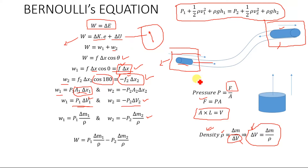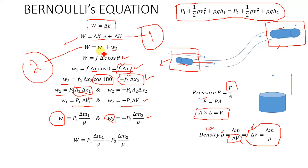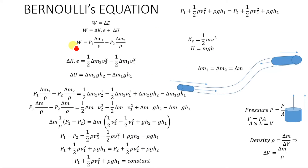Substituting the values of W1 and W2 into the total work equation W equals W1 plus W2, we get the total work done as P1·Δm1/ρ minus P2·Δm2/ρ. This is the derived expression for the left-hand side of equation one.